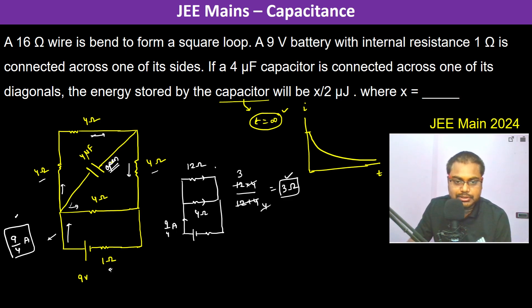So therefore if it is i1 and i2, we can clearly see i2 into 4 should be equal to i1 into 12, because both of them are in parallel. So therefore i2 is equal to 3 i1.